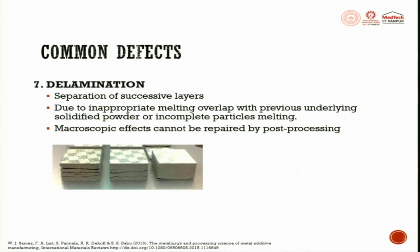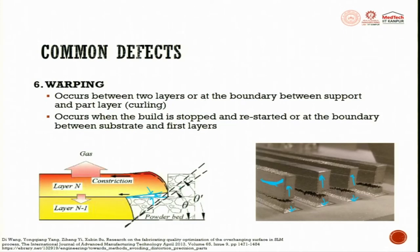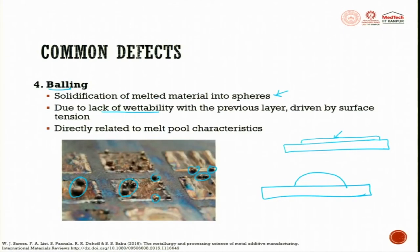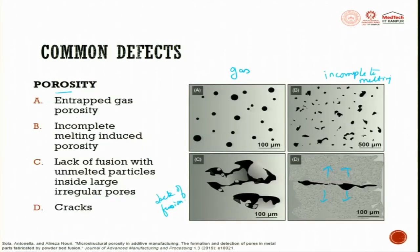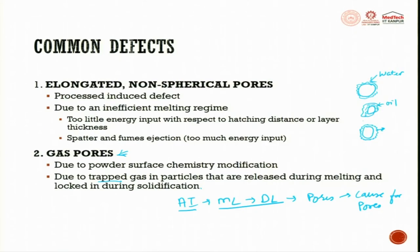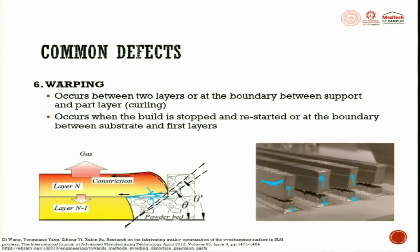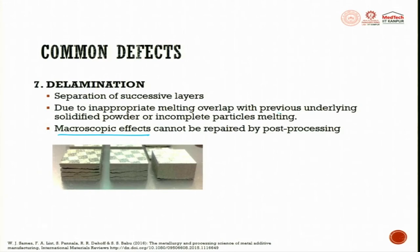Delamination is separation of successive layers. Due to inappropriate melting overlap with the previous underlying solidified powder, or incomplete particle melting, delamination occurs. Macroscopic effects cannot be repaired by post processing - delamination cannot be removed, warping cannot be done, cracking can be done to some extent, balling cannot be done, unfused powder cannot be fixed. Porosity can have some amount of closure, but balling, cracking, warping and delamination cannot be repaired through post processing.